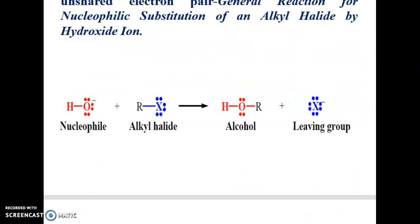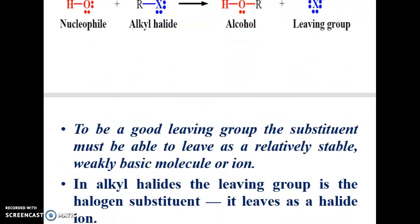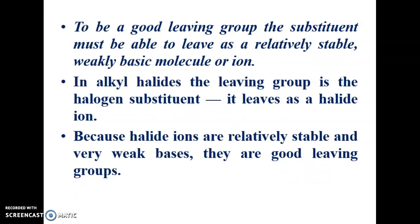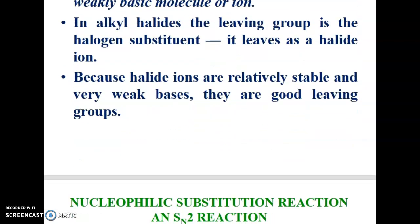To be a good leaving group, the substituent must be able to leave as a relatively stable, weakly basic molecule or ion. In alkyl halides, the leaving group is the halogen substituent; it leaves as a halide ion because halide ions are relatively stable and very weak bases — they are good leaving groups.